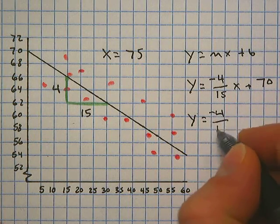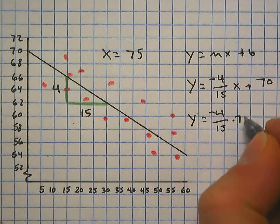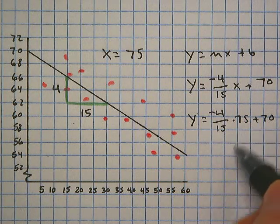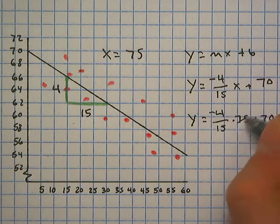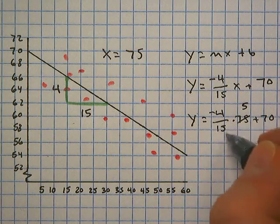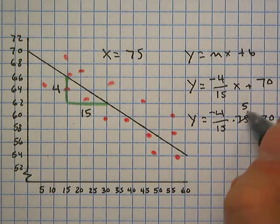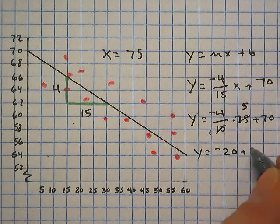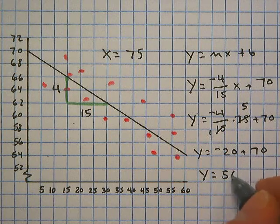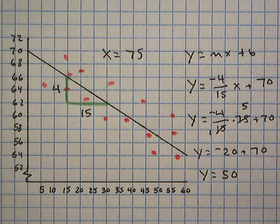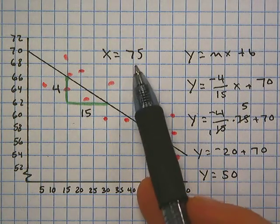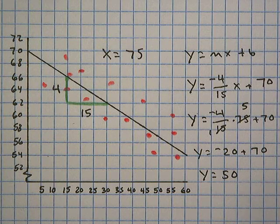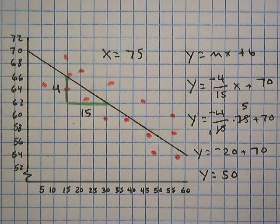Now what we do is plug in our x value into our x variable. Y equals negative four over 15 times 75 plus 70. 15 goes into 75 five times. It's nice that it worked out like that on both of these. So y equals negative 20 plus 70. So y is equal to 50. So for x equals 75, we expect y to be equal to 50.